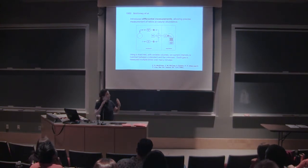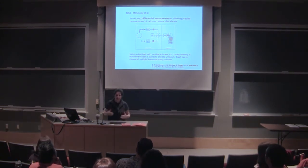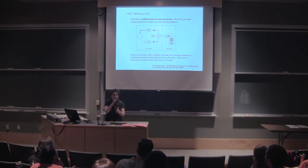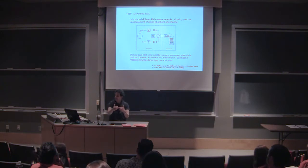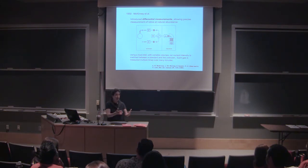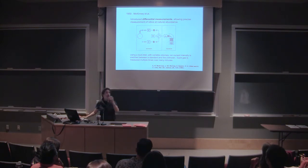What continuous flow has done is taken us away from dual inlet systems. We still do a differential measurement, but instead of back and forth we measure one material, then sometime later another, and make the comparison across time. For that to be possible we needed more stable electronics and we needed to develop plumbing and gas management to accommodate the flow of helium or whatever carrier gas is used — and that was successfully worked out starting in the 1980s and continuing to today.